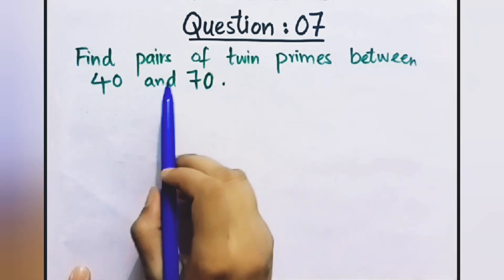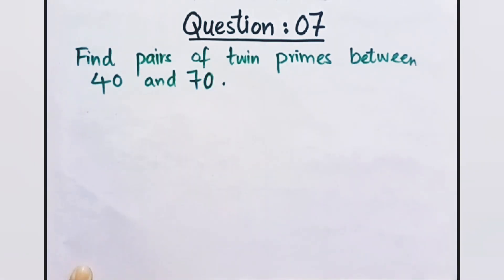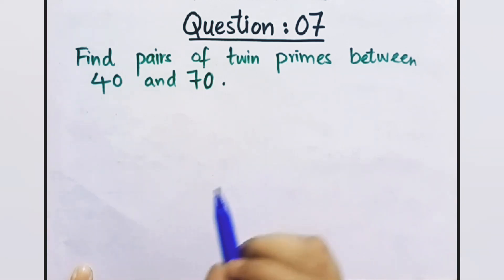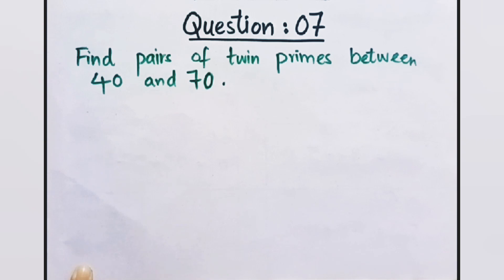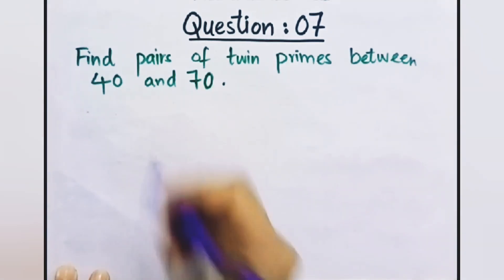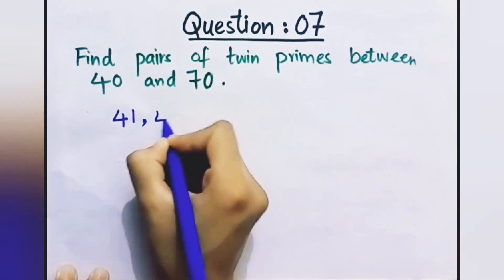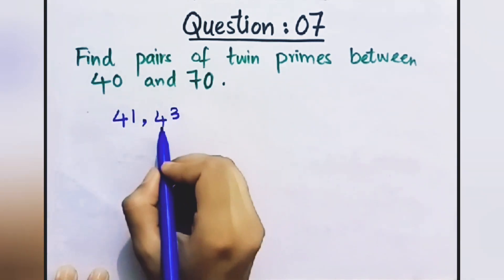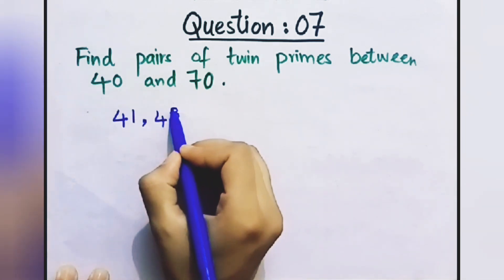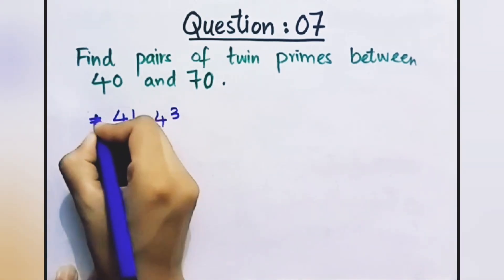Question number 7: Find pairs of twin primes between 40 and 70. Twin primes are those where if you add or subtract 2 from a prime number, you get another prime number. In this interval, checking 41: add 2 to get 43. Now 41 is a prime number and 43 is a prime number, so one pair is 41 and 43.